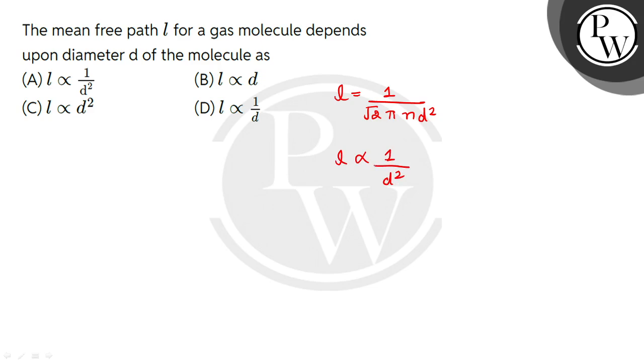So L is inversely proportional to 1 by d squared. So we can say that option A would be the correct choice.